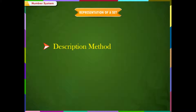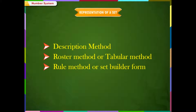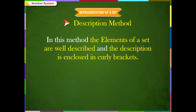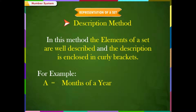Representation of a set. Sets can be represented in the following methods: 1. Description method, 2. Roaster method or tabular method, 3. Rule method or set builder form. In the description method, the elements of a set are well-described and the description is enclosed in curly brackets. For example, A is equal to the months of a year in curly brackets.